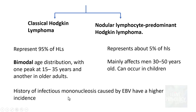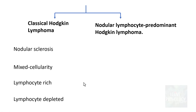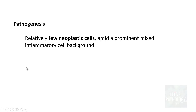History of infectious mononucleosis caused by Epstein-Barr virus confers a higher incidence of development of either of these lymphomas. Classical Hodgkin Lymphoma has four subtypes: Nodular Sclerosis, Mixed Cellularity, Lymphocyte Rich, and Lymphocyte Depleted. The morphological aspects of these four types will be discussed in the next session. For now, let us understand in detail the pathogenesis of Hodgkin Lymphoma.